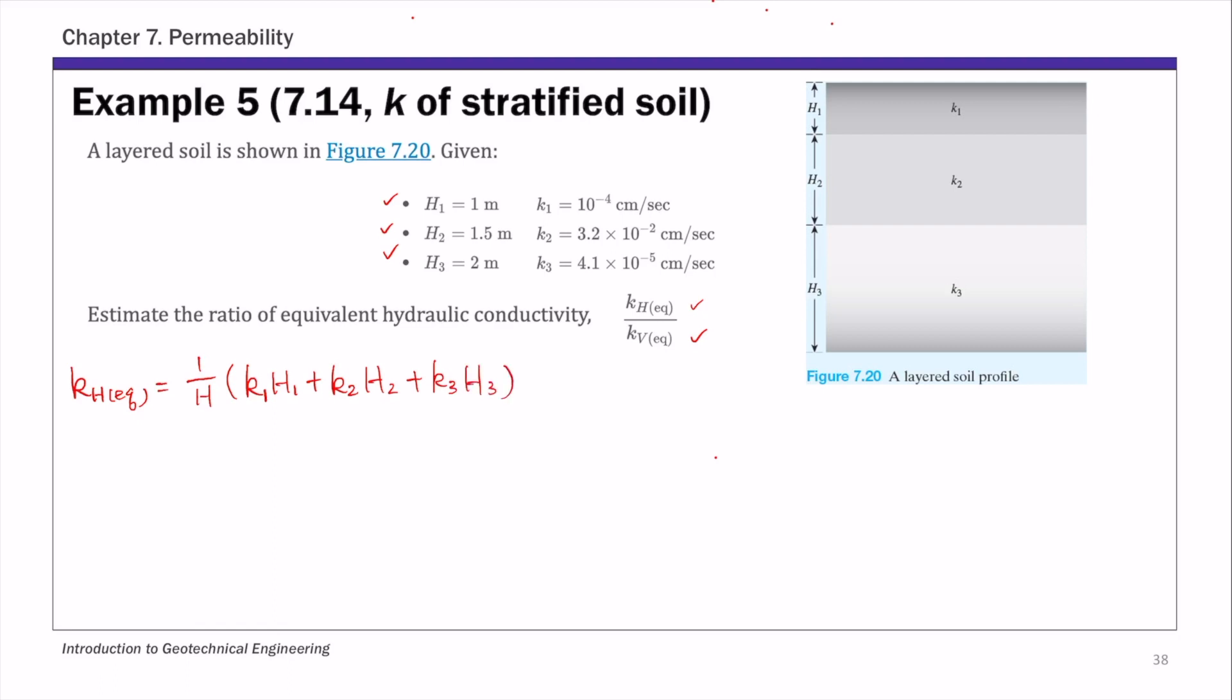Then substitute the given values into this expression. And pay attention to units. So here we are given k in terms of centimeter per second, and h are given in terms of meter.